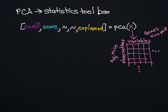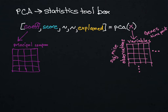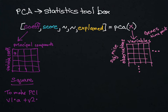The first output of the PCA function is the coefficient matrix, which has the principal components in the columns and the variable coefficients in the rows. This will always be a square matrix, because you have the same number of principal components as you have variable coefficients. This is really the recipe for calculating a given principal component — to make principal component 1, you take variable 1 and multiply it by the value in A, plus variable 2 times the value in B, and so on. It's a recipe.